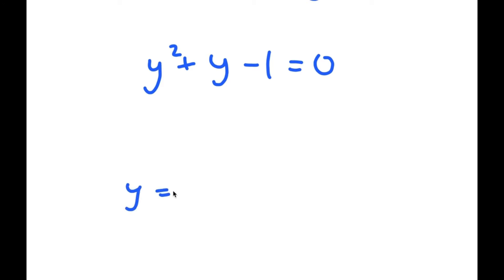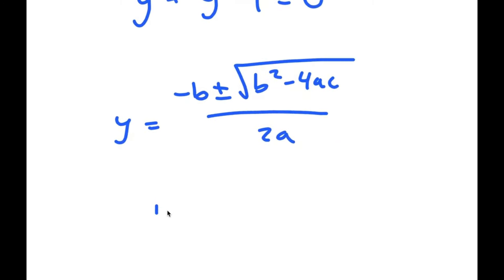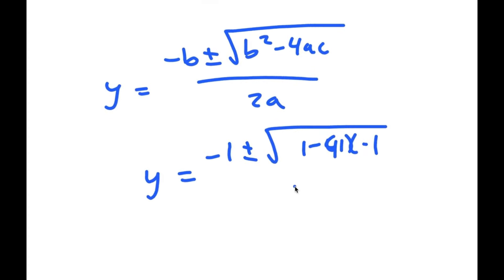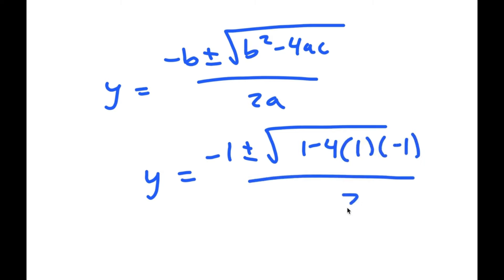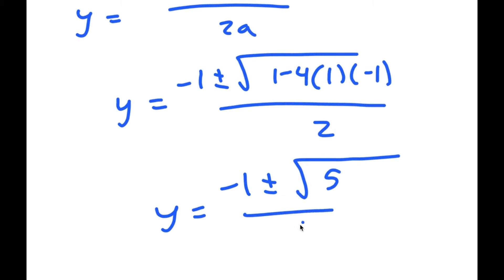And if I use the quadratic formula, which is negative b plus or minus the square root of b squared minus 4ac all over 2a, I get y is equal to negative 1 plus or minus the square root of 1 minus 4 times 1 times negative 1, all over 2, which is equal to negative 1 plus or minus the square root of 1 plus 4, which is 5, over 2.